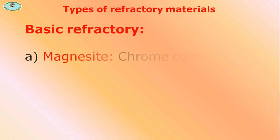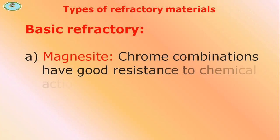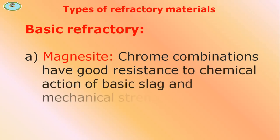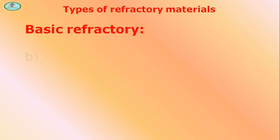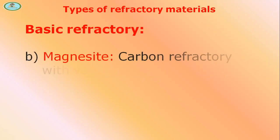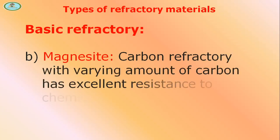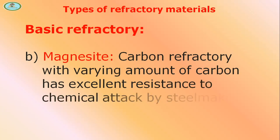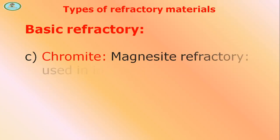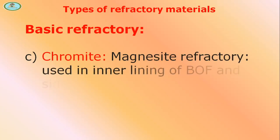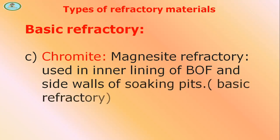These combinations have good resistance to the chemical action of basic slag, and good mechanical strength and volume stability at high temperatures. Magnesite-carbon refractories with varying amounts of carbon have excellent resistance to chemical attack by steel-making slags. Chromite-magnesite refractory is used in the inner lining of BOF and slide walls of soaking pits.